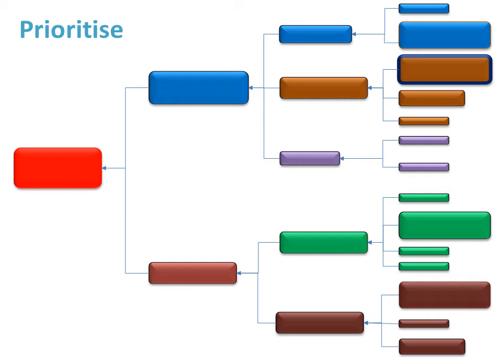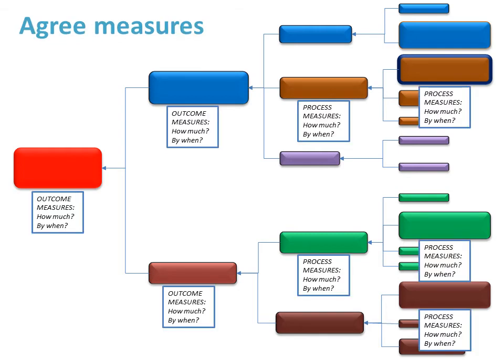Once you have a functioning driver diagram to visually represent your strategy, you can start to use it to help with delivery. First, it can be used as a method to prioritize activity. You can't do everything all at the same time, so a driver diagram can be used to identify which projects or drivers are likely to be more impactful towards achieving your aim. Once you've identified priority areas, it's important to agree on measures — how we actually know that a change you make is an improvement.